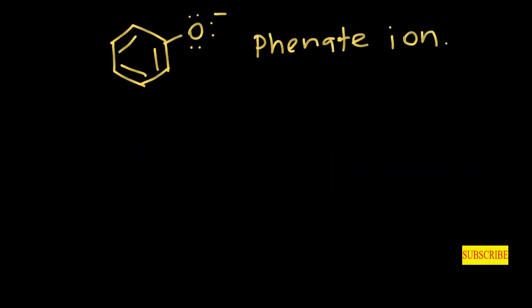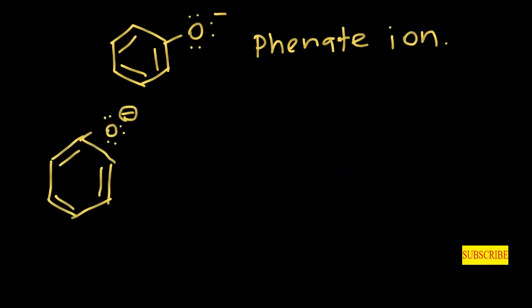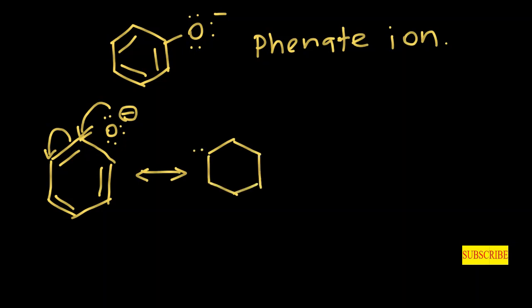Now let's consider phenate ion. Phenate ion will have a few resonance structures. Initially, one lone pair of electrons jumps onto the adjacent carbon, and this pi bond jumps to the next adjacent carbon as a lone pair of electrons. The result is a resonance structure where there is one lone pair of electrons and a double bond with oxygen — this is one resonance structure of phenate ion.